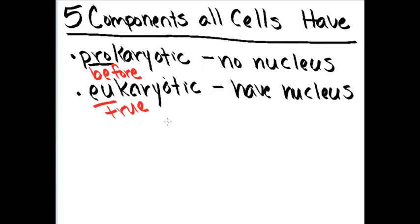So when we are talking about these two types of cells, there are five components that it doesn't matter if you're a prokaryotic organism or a eukaryotic organism, you will have these five components within your cells. And the first one, and this to me is the most obvious, is you have to have a cell membrane.